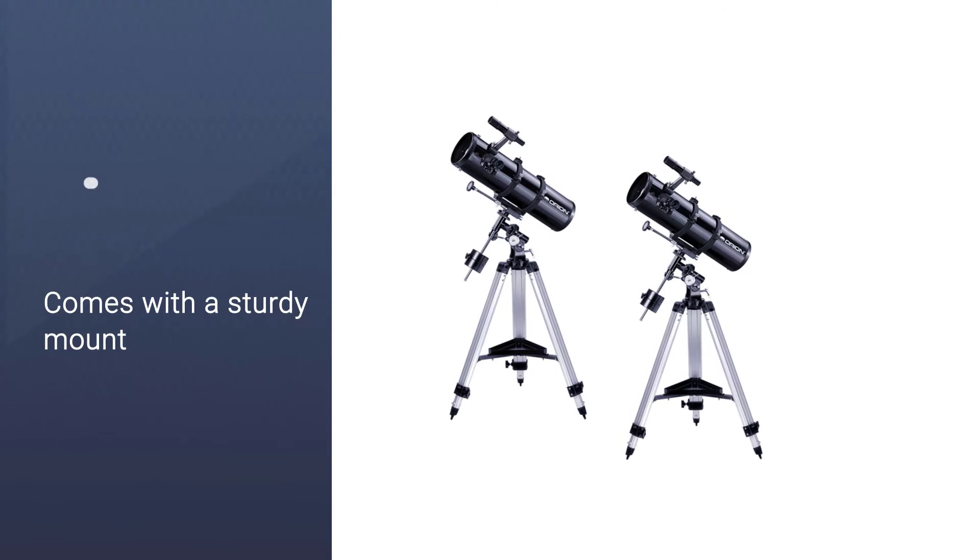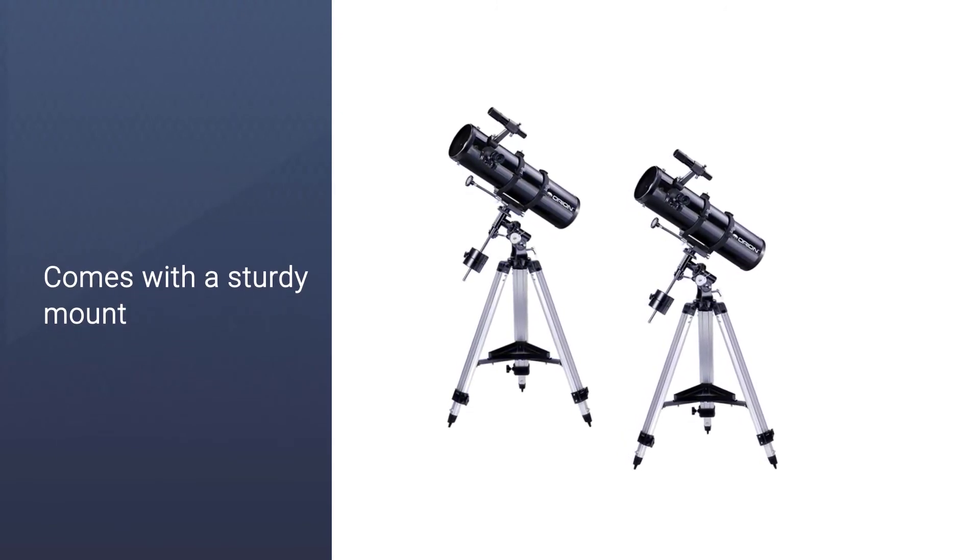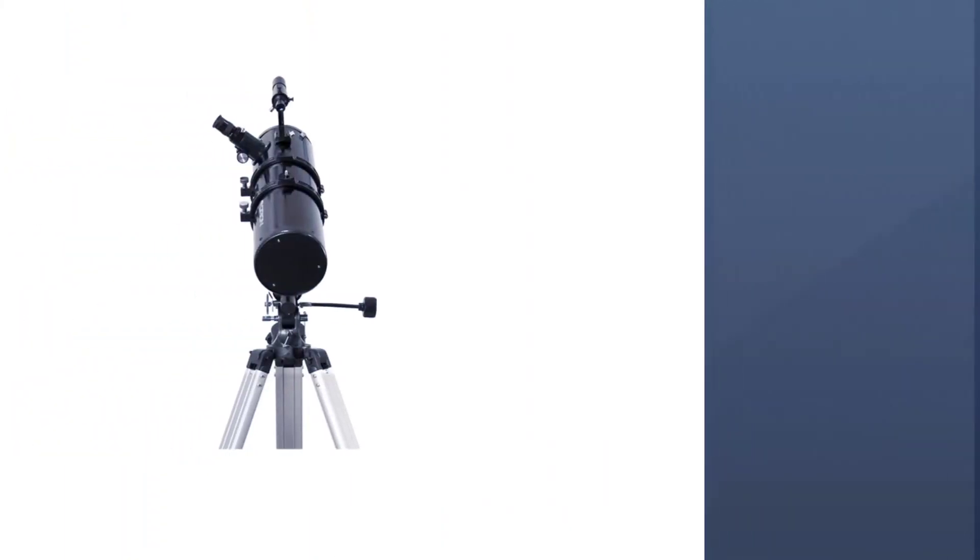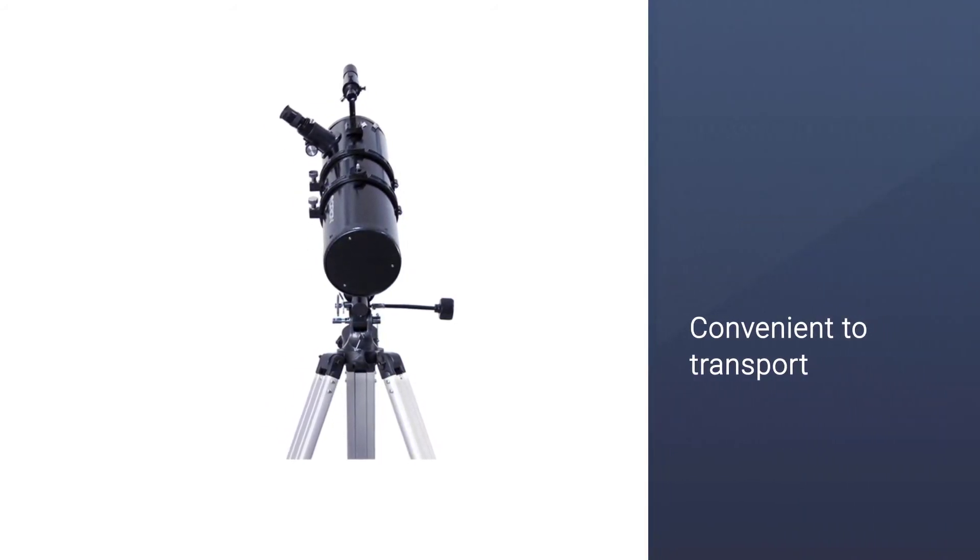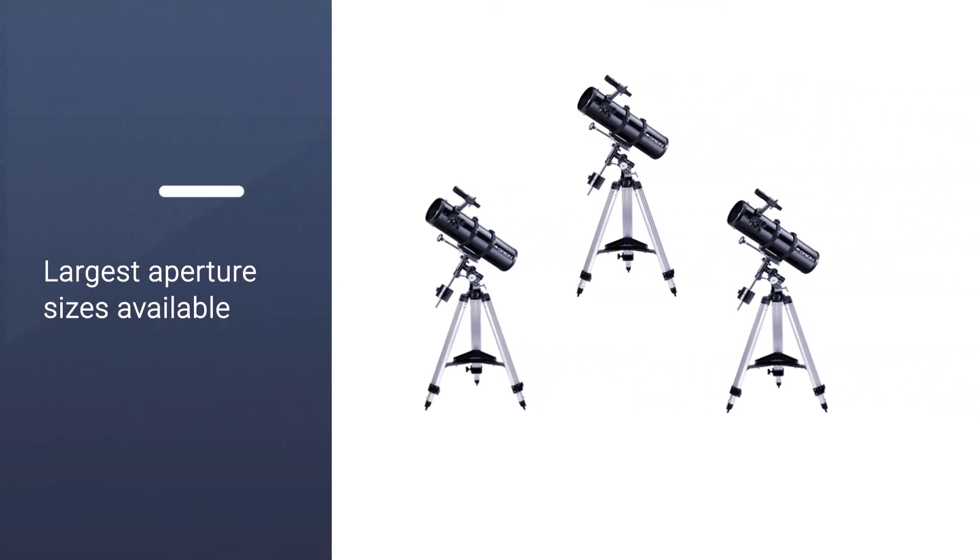The aperture of this telescope is 130 millimeters, 5.1 inches, one of the largest aperture sizes available in the best telescope for beginners category. This best telescope for astrophotography lets in a reasonable amount of light so you can see Saturn clearly.